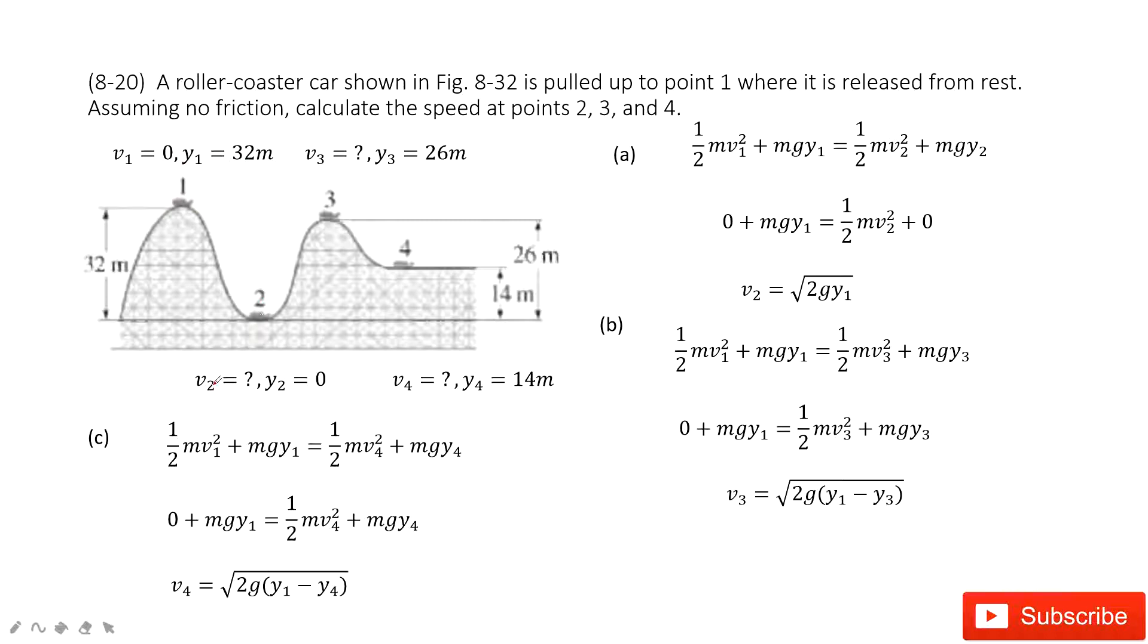At position 2, the velocity is unknown but y2 is 0. At position 3, v3 is unknown but y3 is 26 m. At position 4, we need to find the velocity and y4 is 17 m.